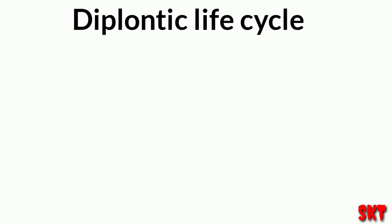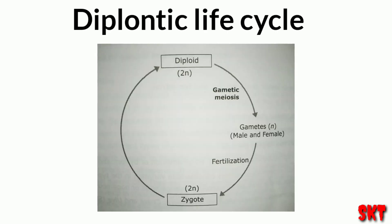The second one is the diplontic life cycle. Here, there is a diploid organism and it produces male and female gametes due to meiosis, which are haploid. Due to fertilization, this gives rise to a zygote, which is diploid, and the zygote germinates to produce a diploid organism.